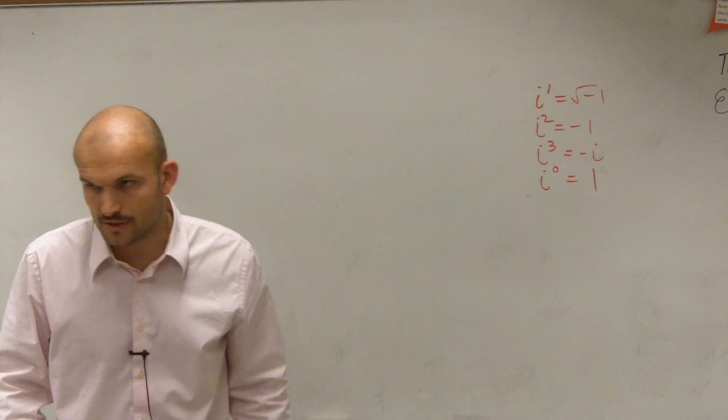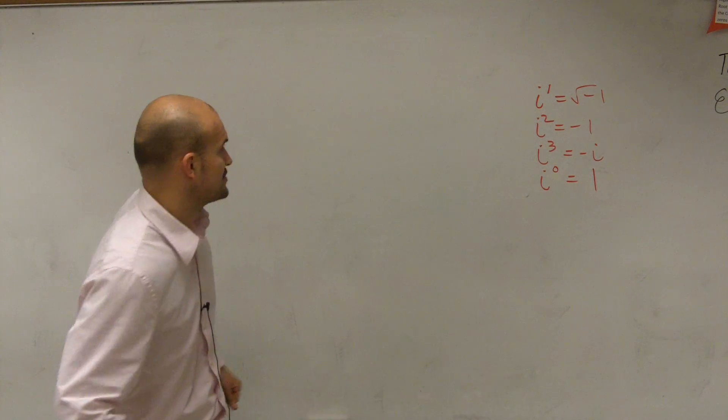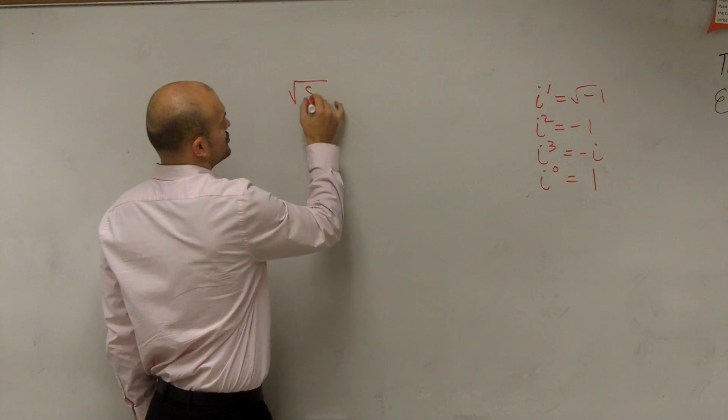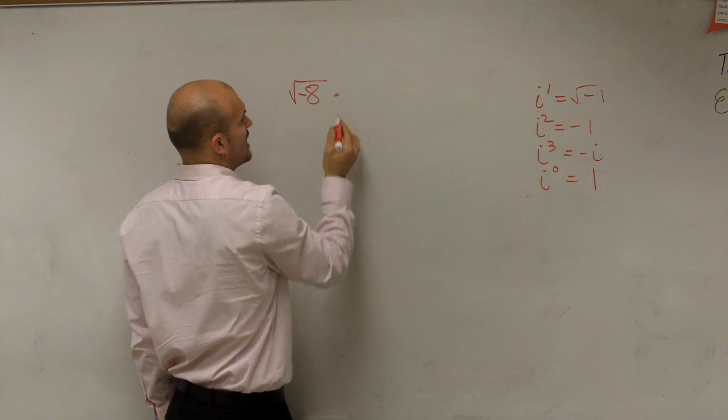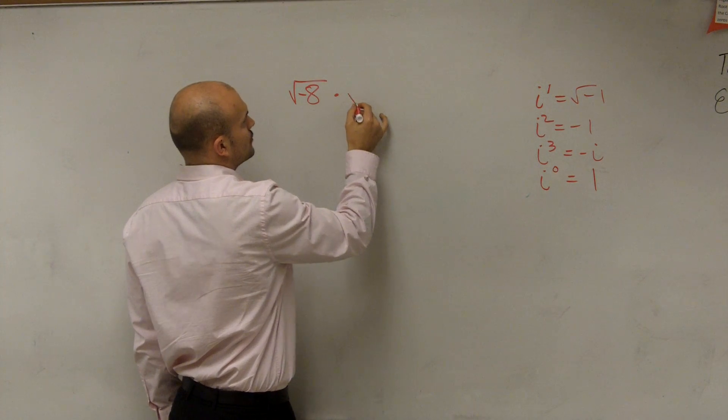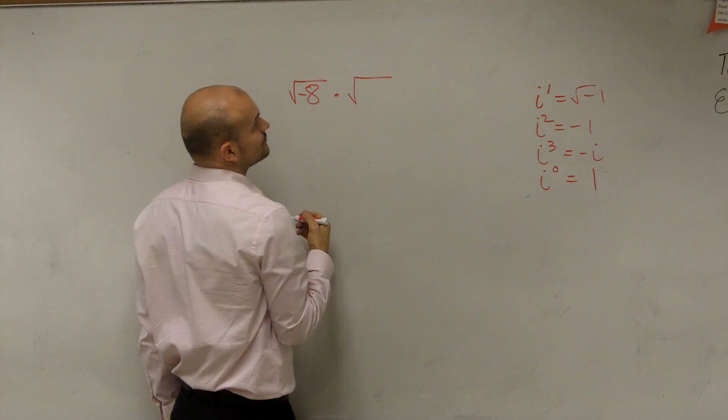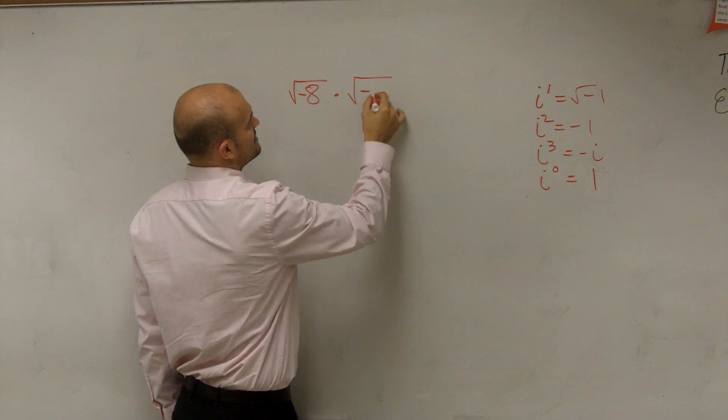The next thing we want to look at, I'm going to give you guys three examples of multiplication. The first one is square root of negative 8 times square root of negative 6.